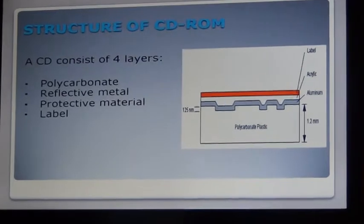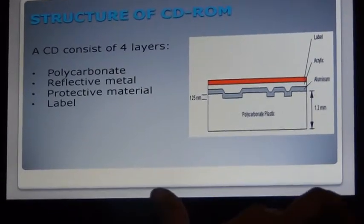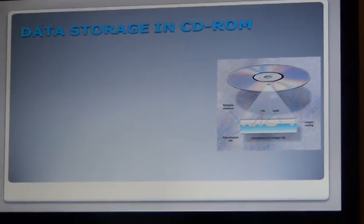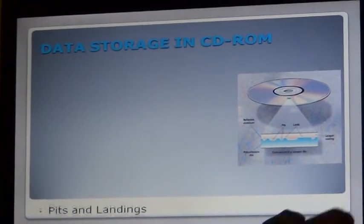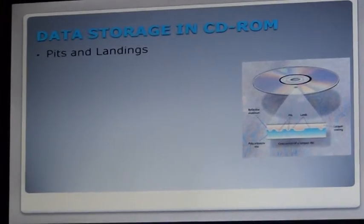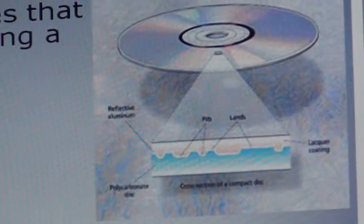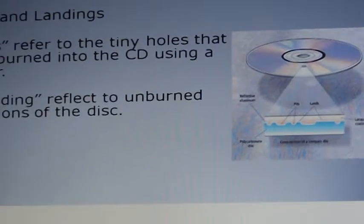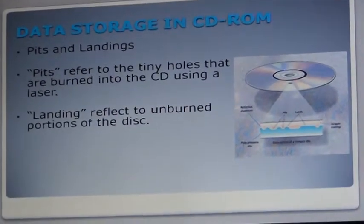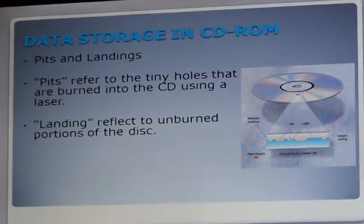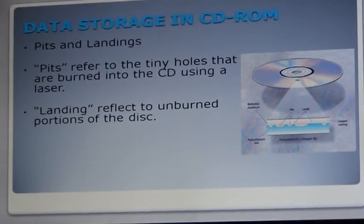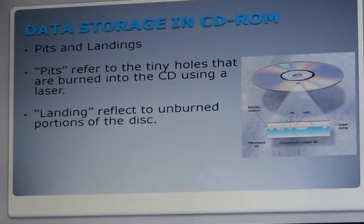I am going to explain how data storage in CD-ROM takes place. Data is stored on the CD-ROM disc through the use of pits and landings, as we are seeing in the diagram. Pits refer to the troughs, and the gaps between them are referred to as landings. Pits refer to the tiny holes that are burned into the CD using a laser. Landings refer to the unburned portions of the disc. The landings are coated with a reflective medium, and since there is no alteration in the surface, they redirect the laser light. The pits refract the laser light in many different directions and therefore no direct reflection is seen by the detector.